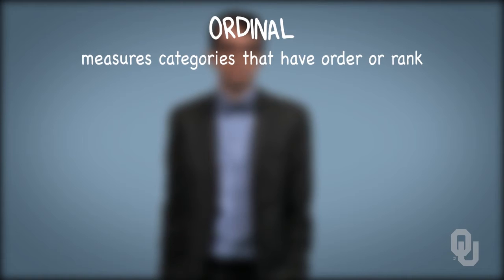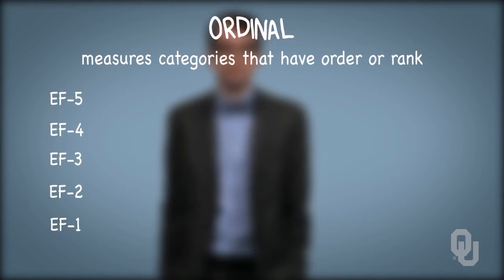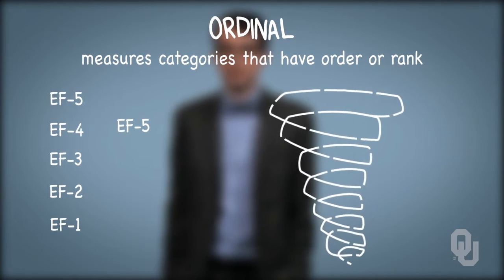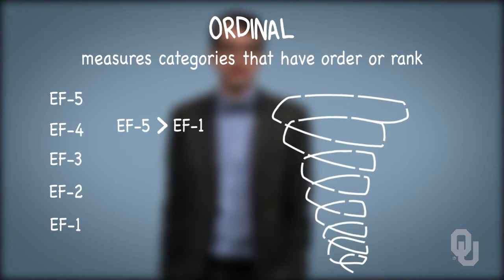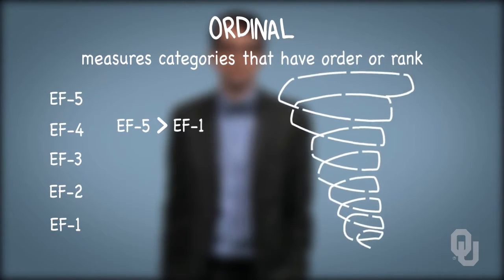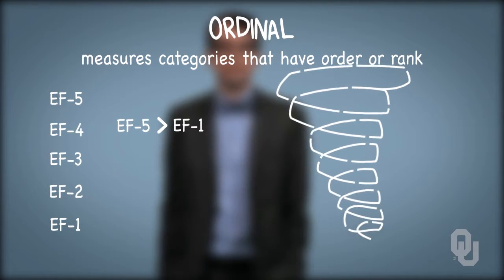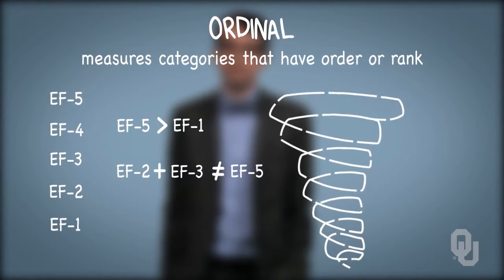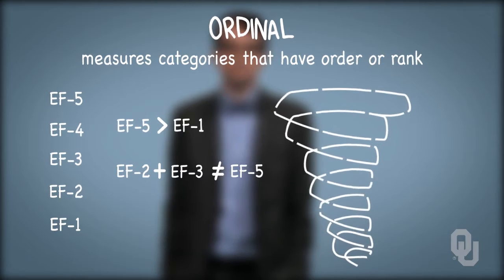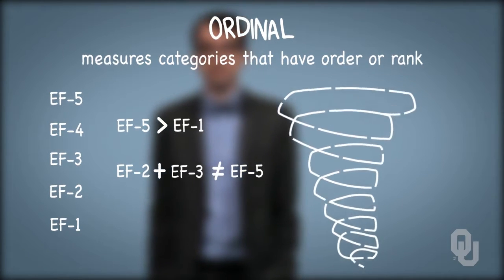A numerical example popular in the Midwest deals with tornado intensity ratings of EF1 to EF5. The intensity of an EF5 tornado is greater than that of an EF1, but an EF5 tornado is not five times as intense. Similarly, the damage from an EF2 and an EF3 tornado does not necessarily equate to one EF5 tornado. An order is implied, but arithmetic operations are not possible.